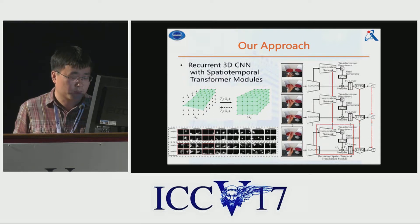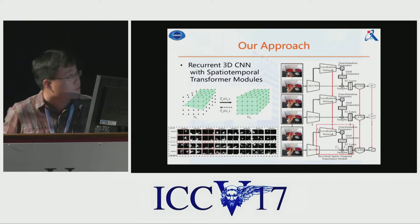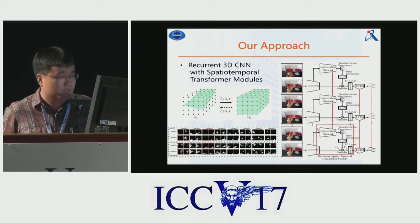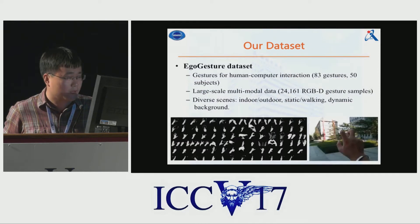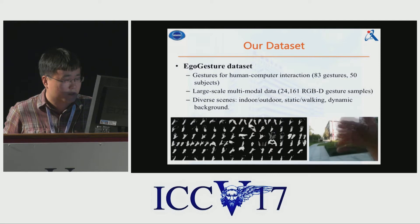So a 3D feature map can be actively warped to a canonical view in both spatial and temporal dimensions.